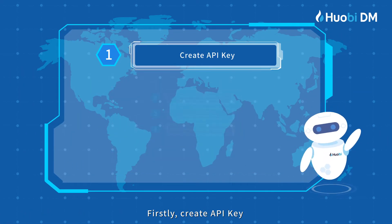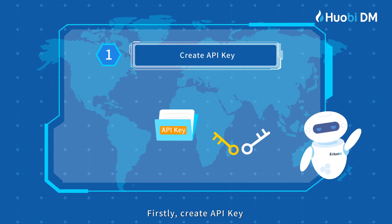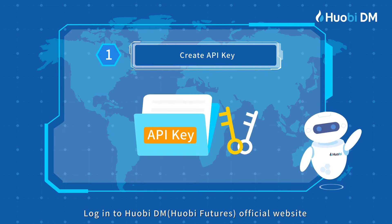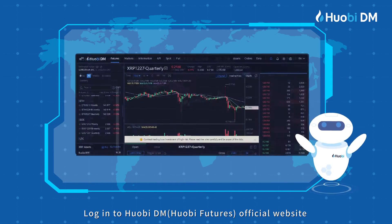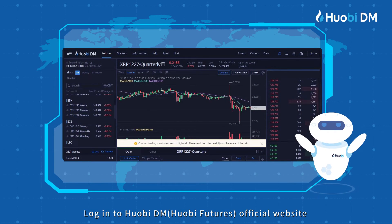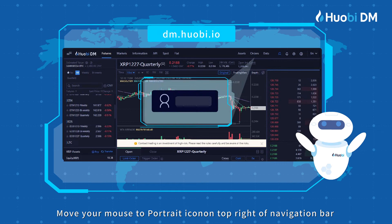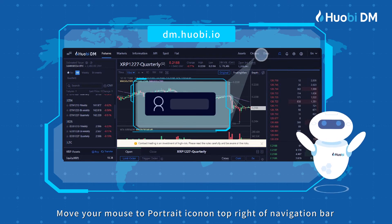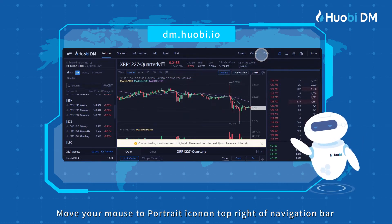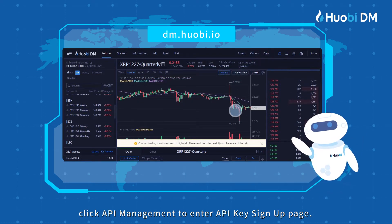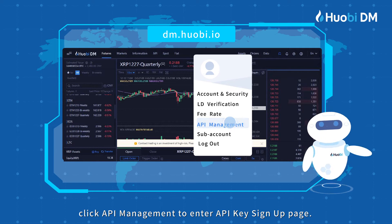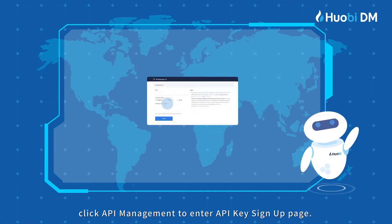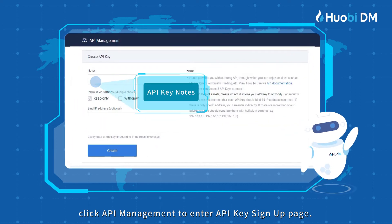Firstly, create an API key. Login to the Hwabi Futures official website. Move your mouse to the portrait icon on the top right of the navigation bar. Click API Management to enter the API Keys sign-up page.